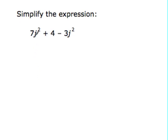Okay, now all I do, the letters have to match, but the exponents also have to match to be a like term. So 7j squared minus 3j squared is 4j squared. The 4 doesn't have a term like it, so we just simply bring it down.